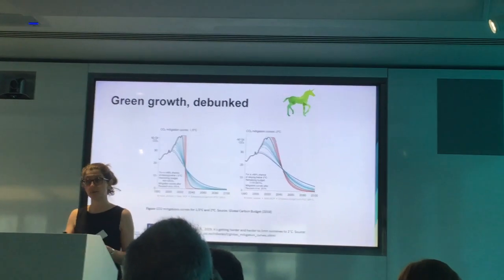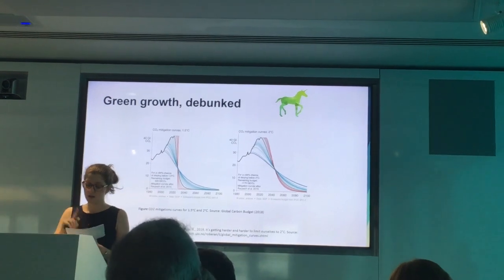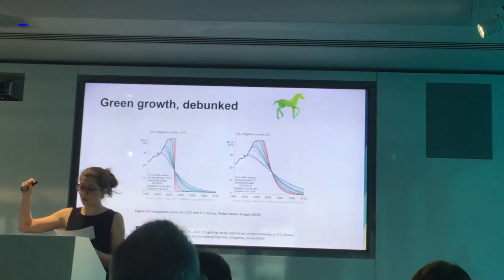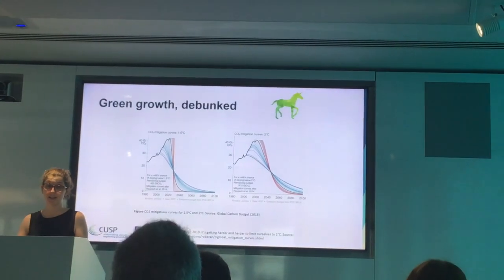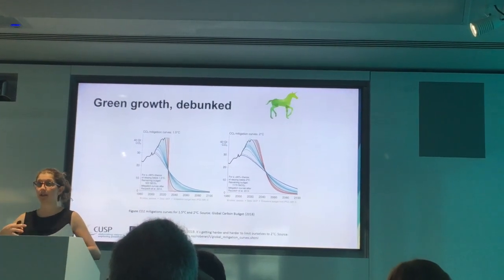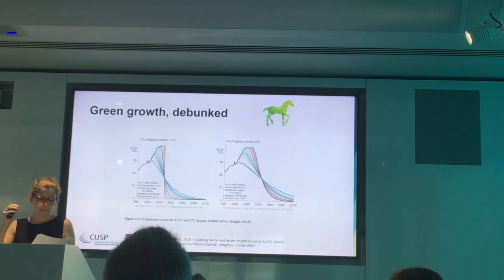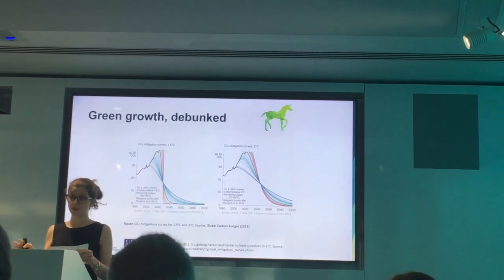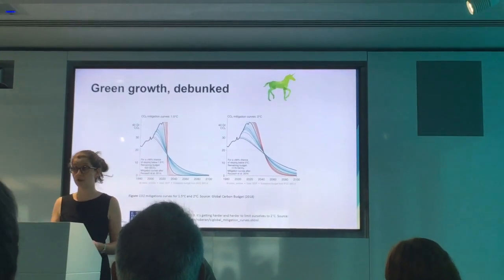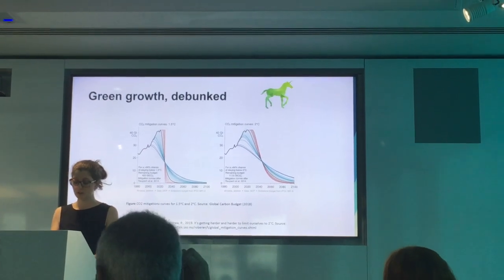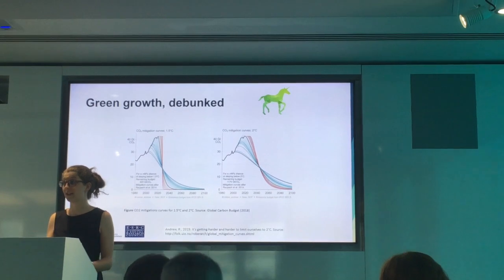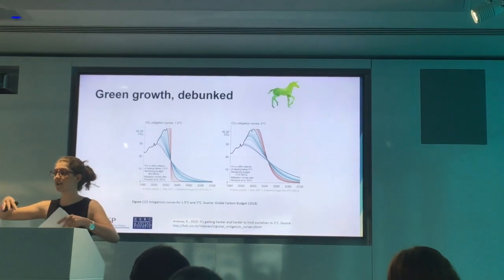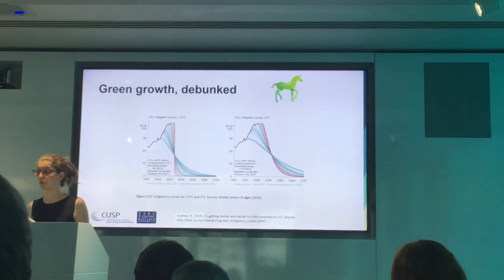We're currently emitting approximately 20 billion tonnes of carbon into the atmosphere each year, and that number is still continuing to grow. The exact number for the carbon budget is contested — it can be stretched if we assume the existence of negative emissions technologies — but even the most generous predictions suggest that if we continue emitting at today's rate, we will have used up that carbon budget in less than 20 years, and the majority of estimates have it under a decade. The necessary rate of decarbonisation is huge, and according to Green Growth Theory, we need to achieve that decarbonisation while all the while continuing to increase the entire global GDP.